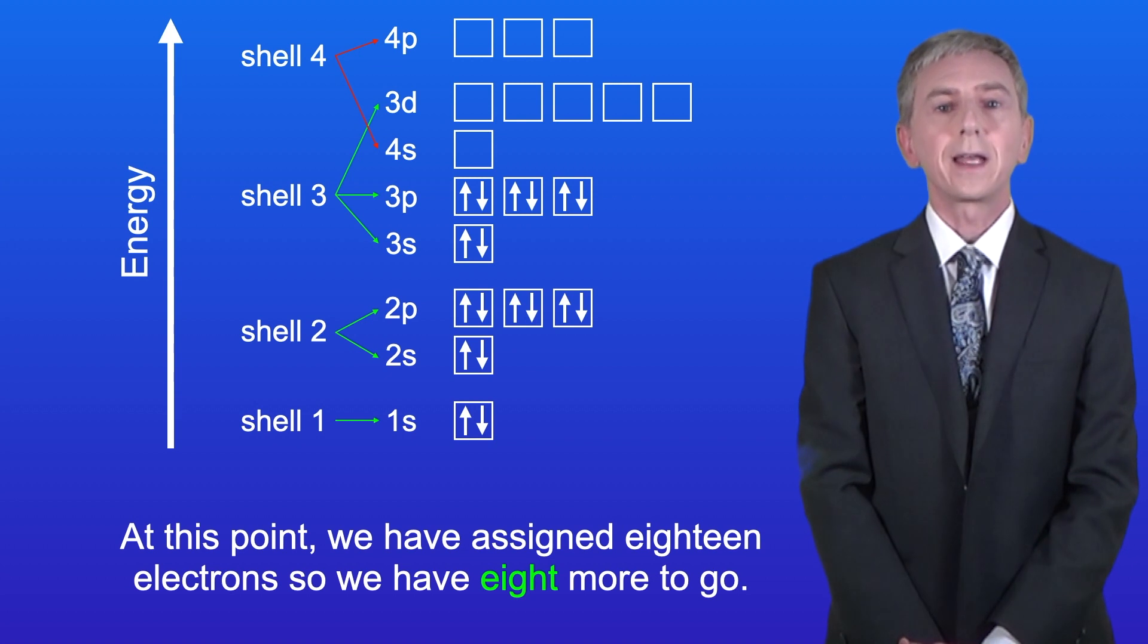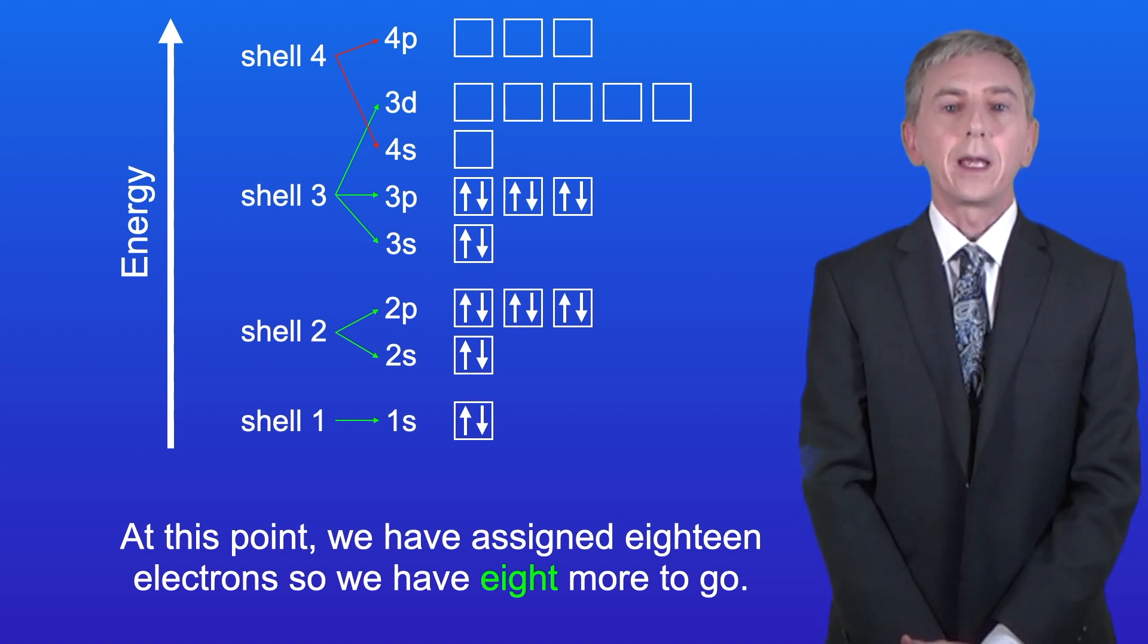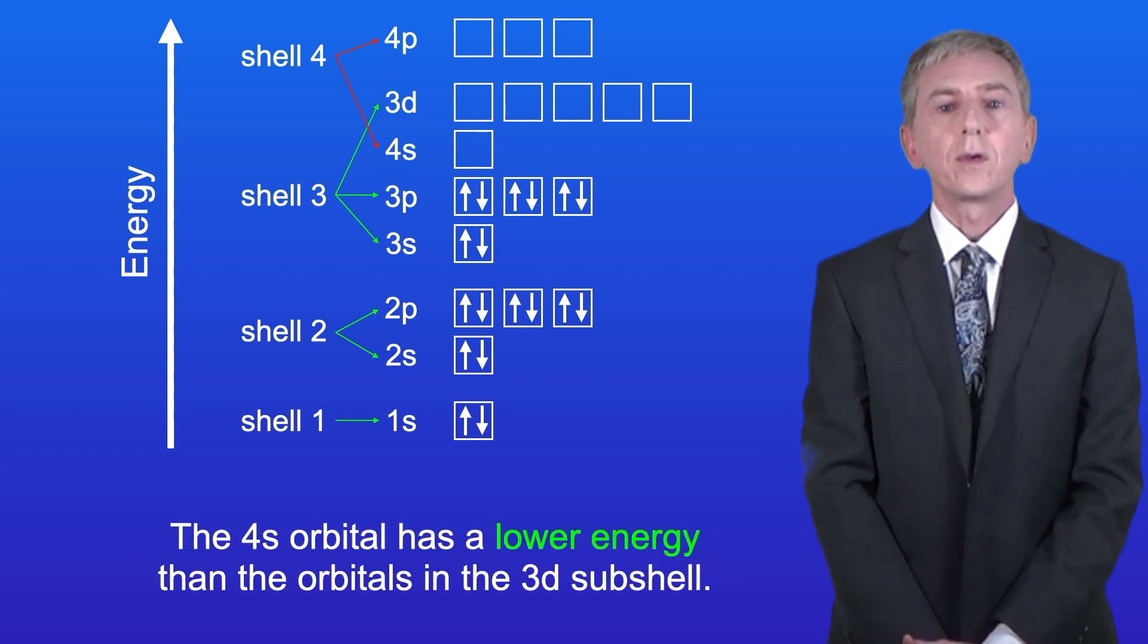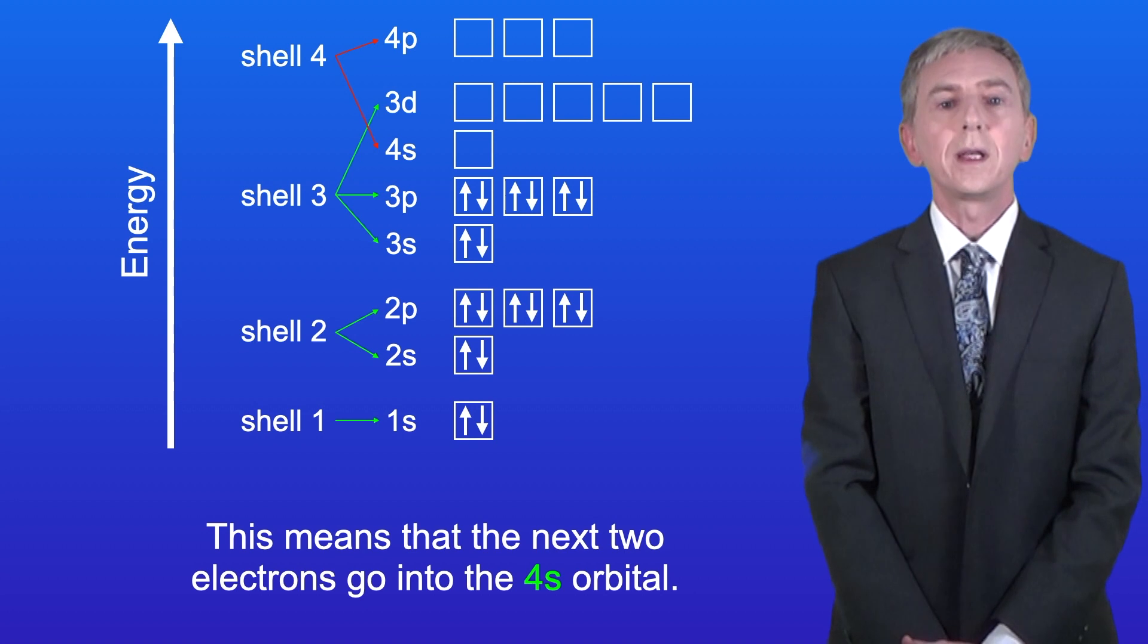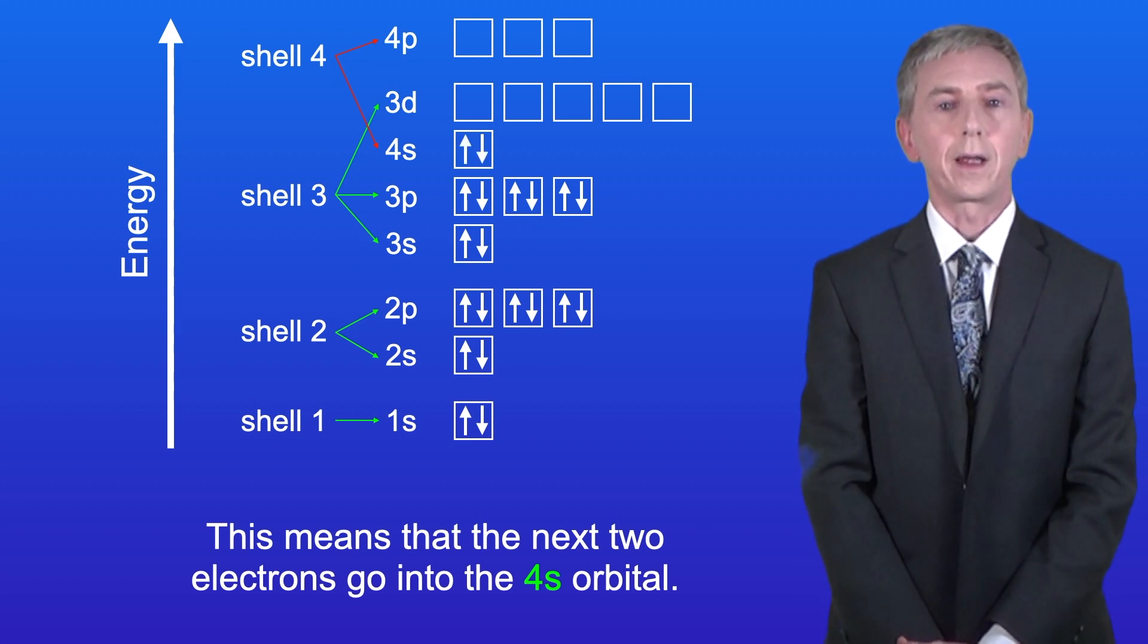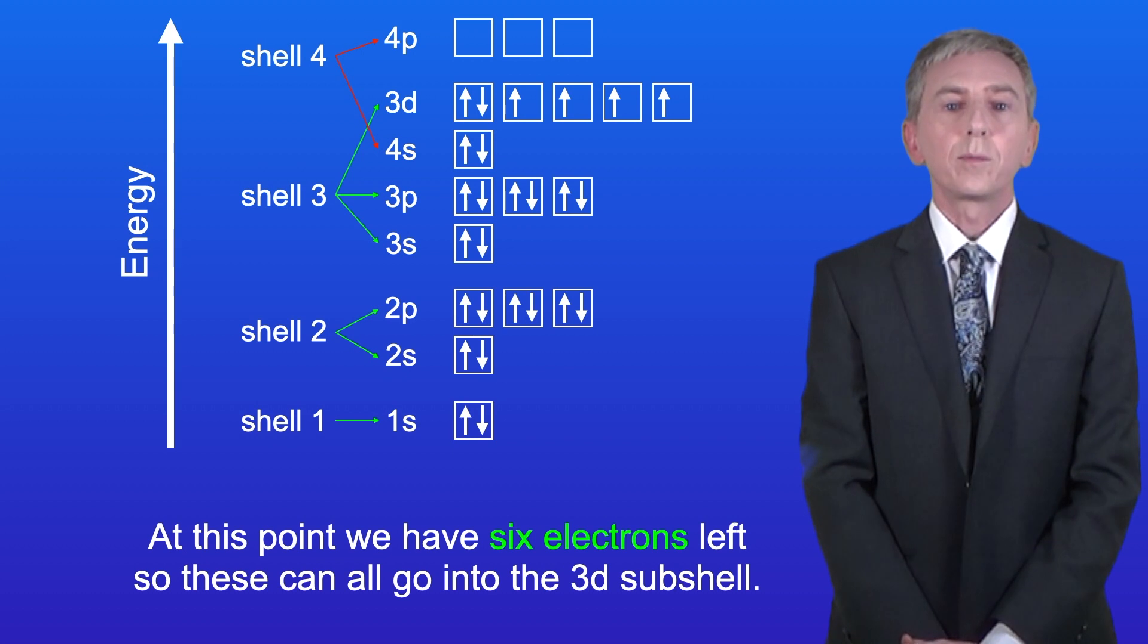At this point we've assigned 18 electrons, so we've got eight more to go. Now as we've seen the 4s-orbital has a lower energy than the orbitals in the 3d-subshell. This means that the next two electrons go into the 4s-orbital like this. At this point we've got six electrons left, so these can all go into the 3d-subshell.